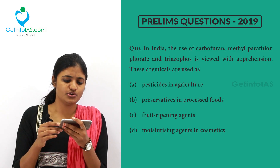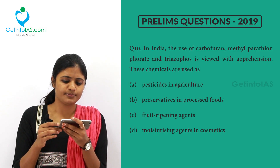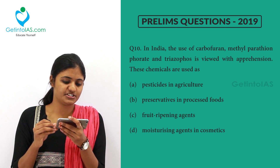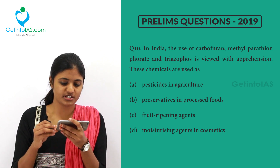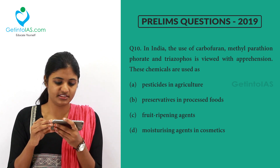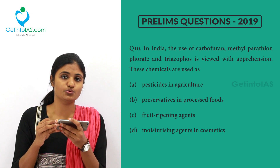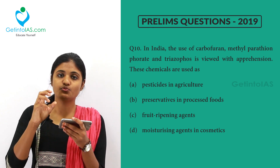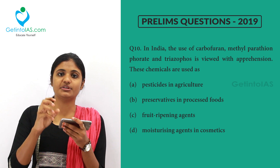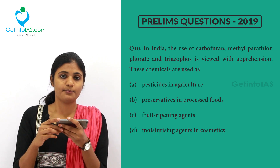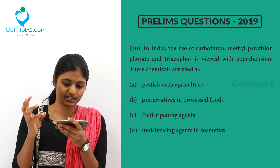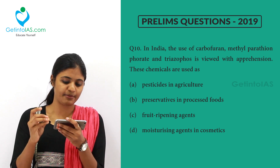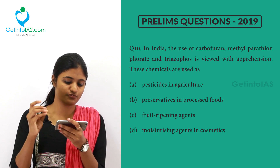Next question: in India, the use of carbofuran, methylparathion, phorate, and triazophos is viewed with apprehension. These chemicals are used as — pesticides in agriculture, preservatives in processed foods, fruit ripening agents, or moisturizing agents in cosmetics.